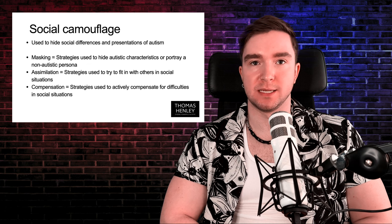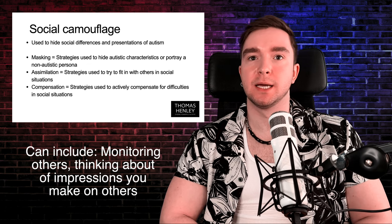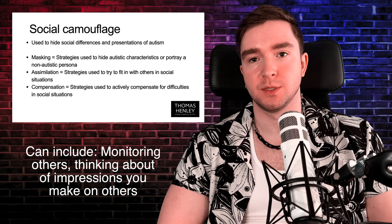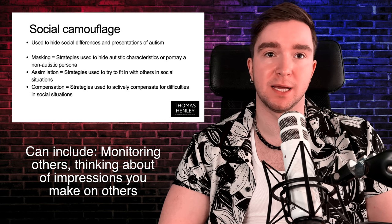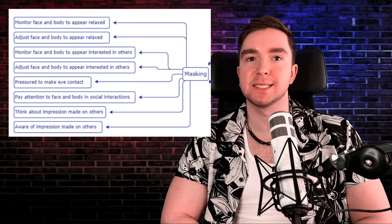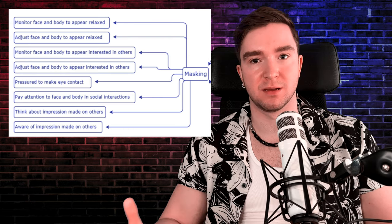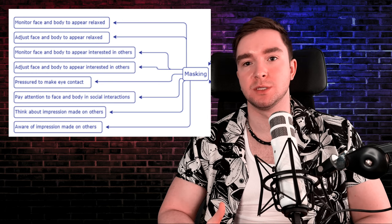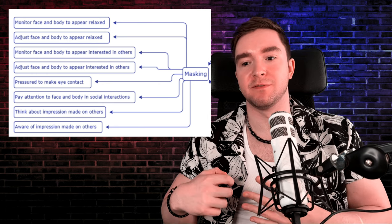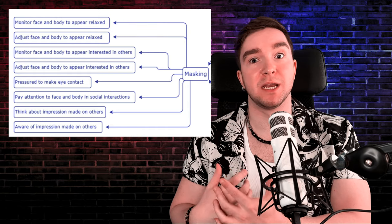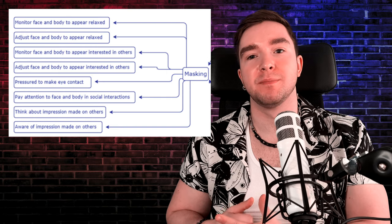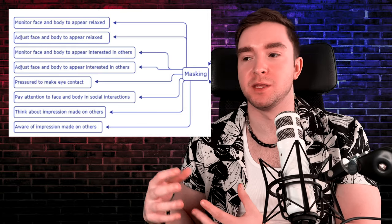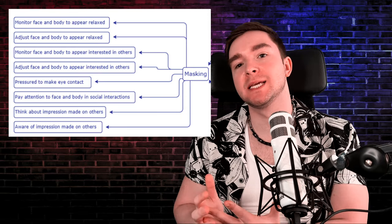Masking is hiding autistic traits, as well as monitoring and changing your body language to reach a desired outcome — usually to fit in, usually to be perceived in a positive light. It can come across as being fake or manipulative in some way, but a lot of the time masking is done to compensate for some level of difference, to address the social disadvantages that might arise within a normal social situation.